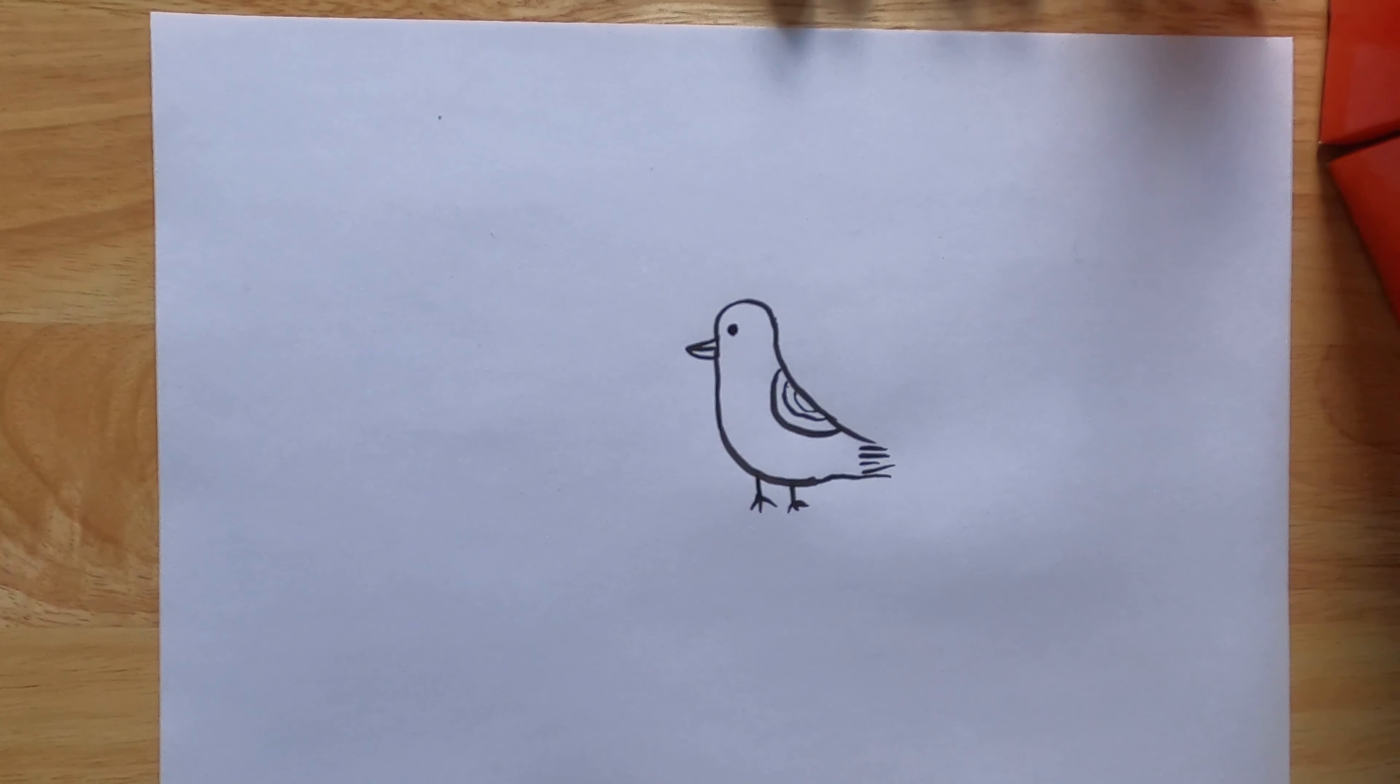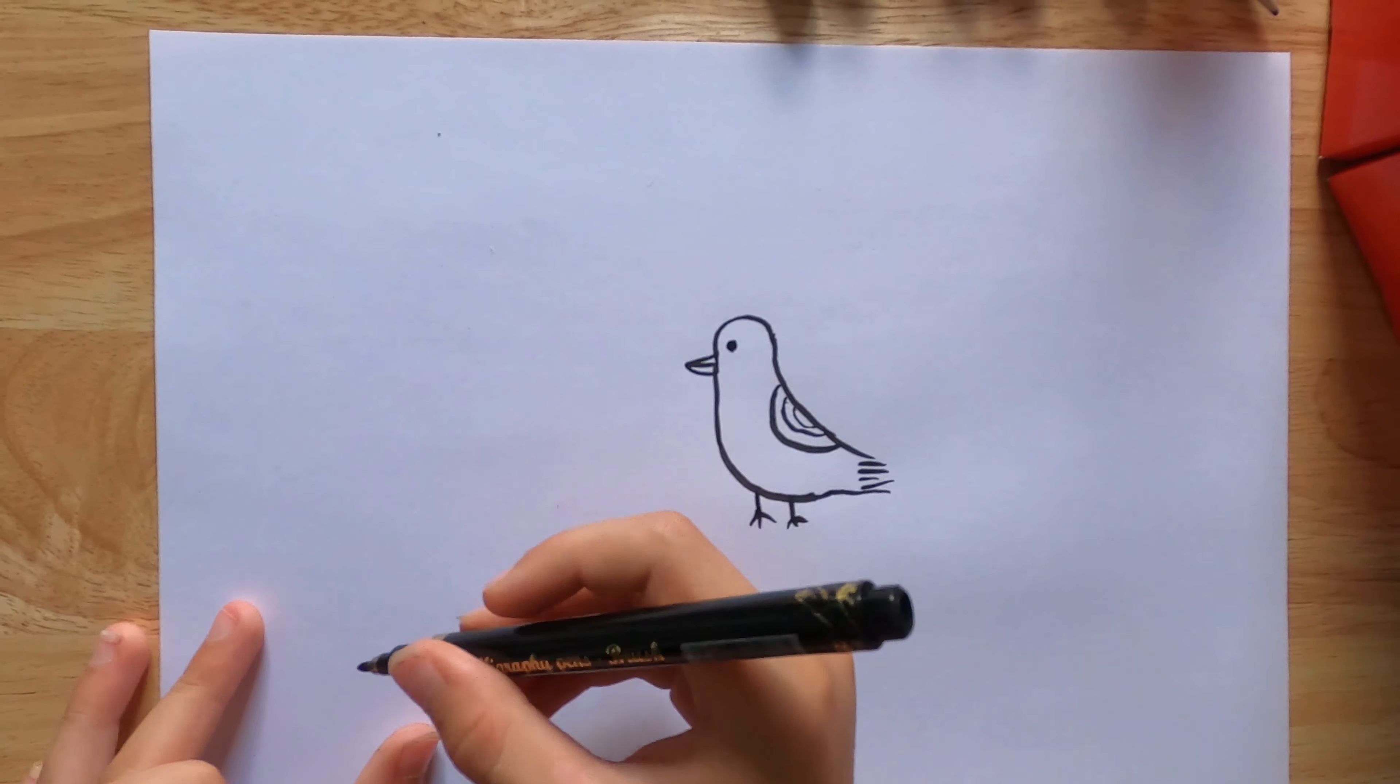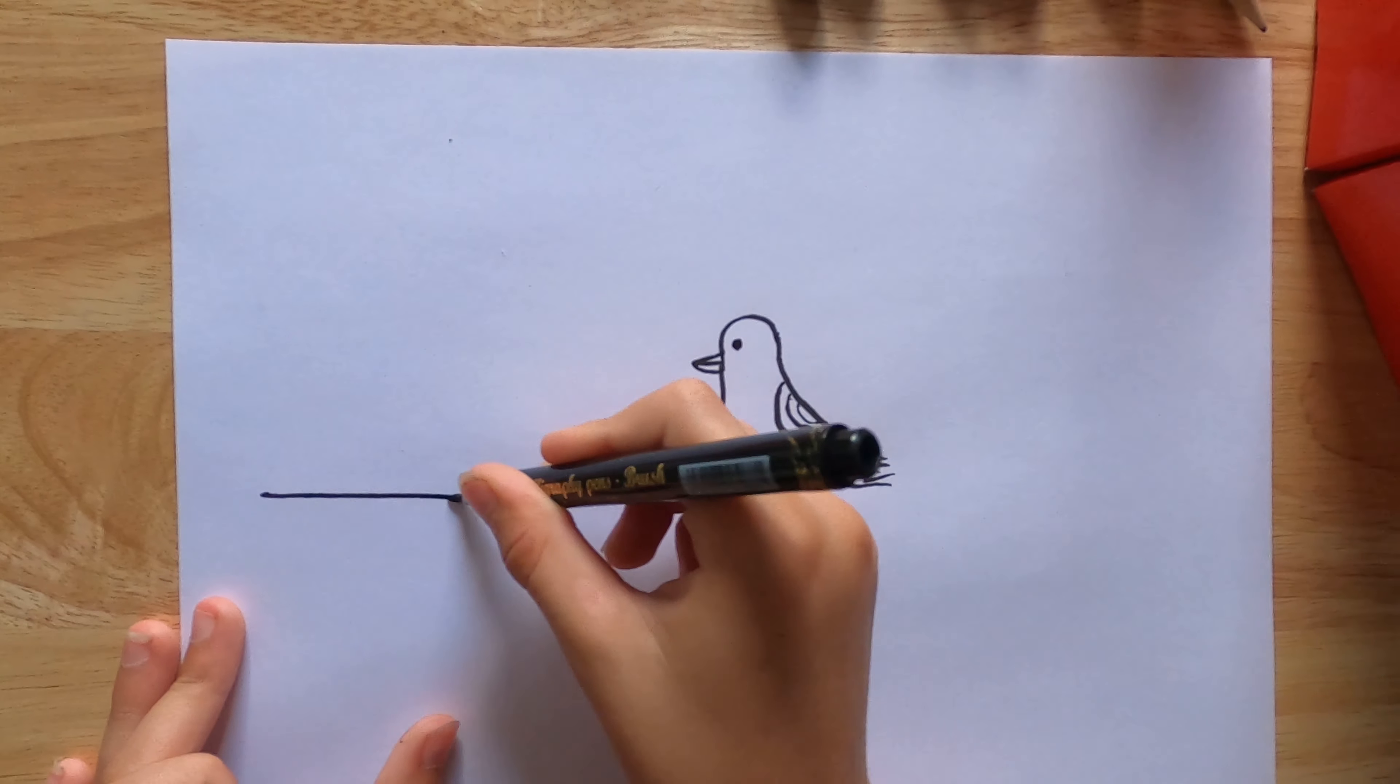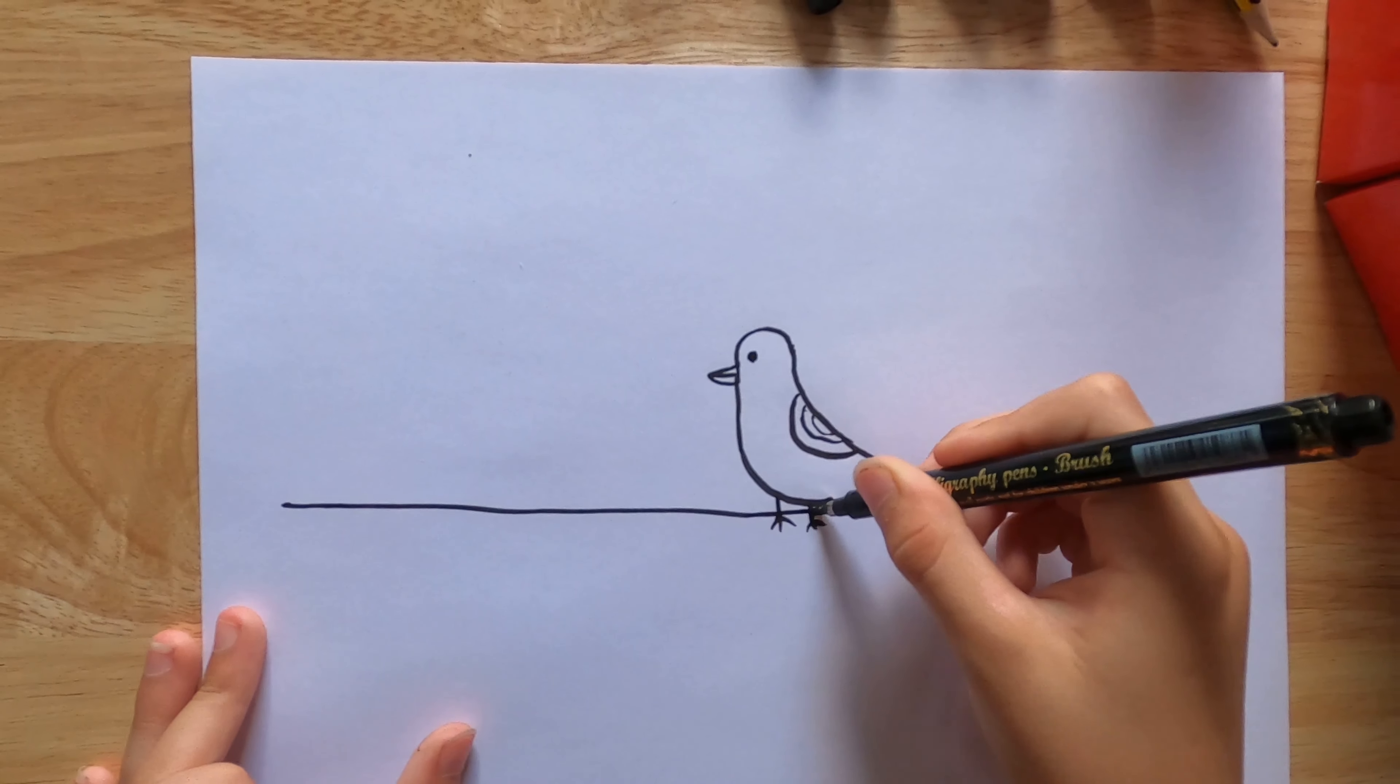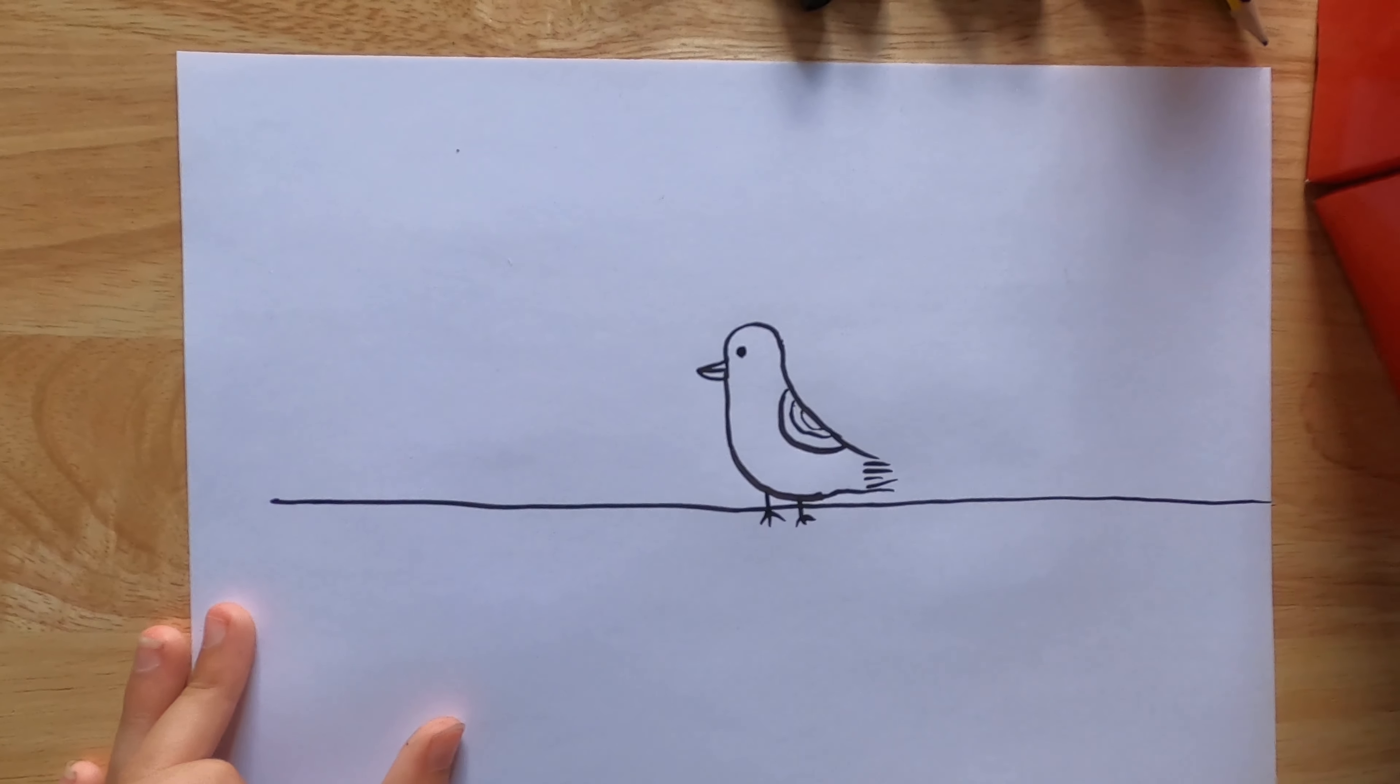Now that we've done our bird, we're going to start on the background. We'll have our point of our branch here. Our branch is going to come along there and end here.